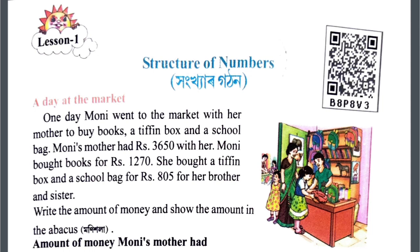One day, Moni went to the market with her mother to buy books, a tiffin box and a school bag. Moni's mother had Rs. 3,650 with her. Moni bought books for Rs. 1,270. She bought a tiffin box and a school bag for Rs. 805 for her brother and sister.